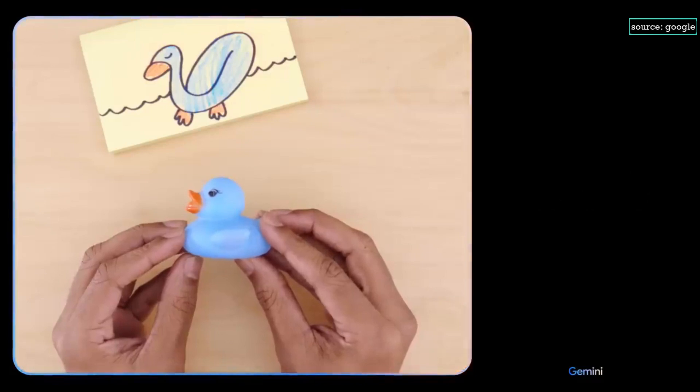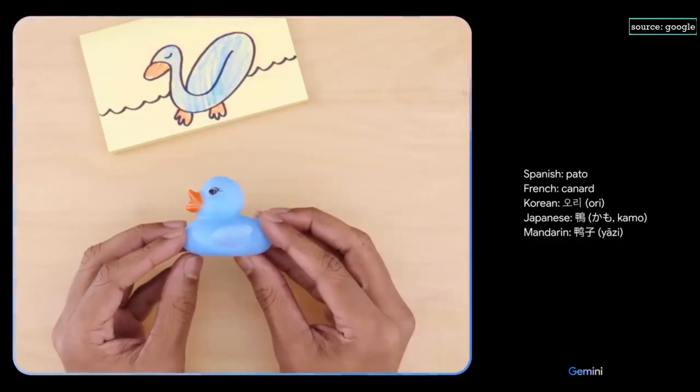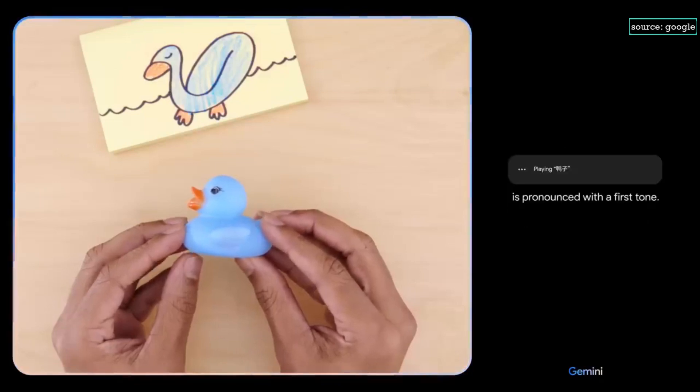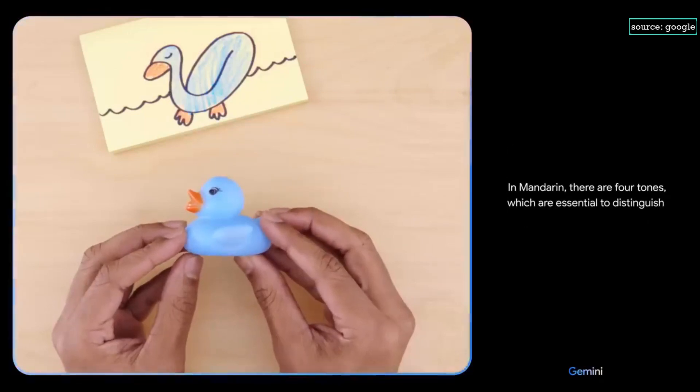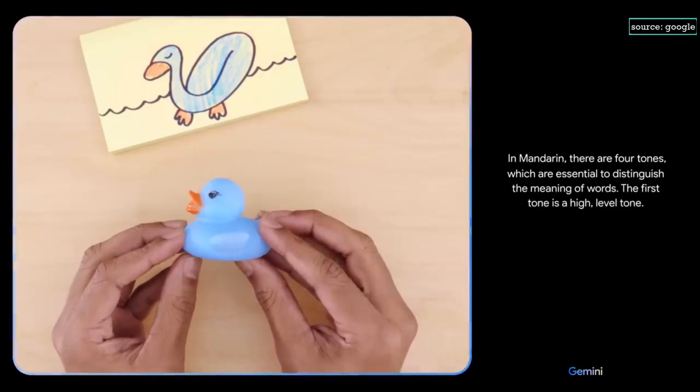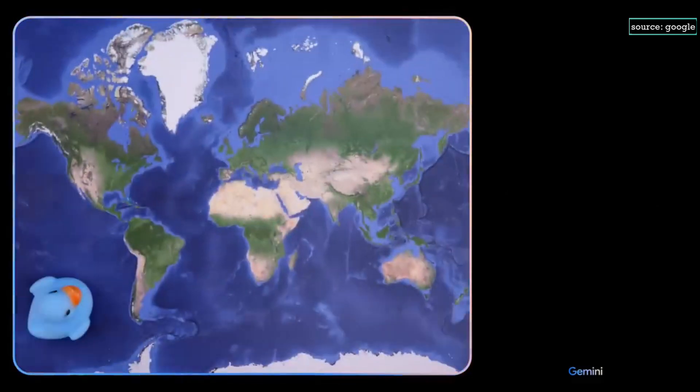Can you teach me how to say this in a different language? And give me a few options. Can you explain how to pronounce the Mandarin one? Is pronounced with a first tone. In Mandarin, there are four tones, which are essential to distinguish the meaning of words. The first tone is a high, level tone. Oh, okay.